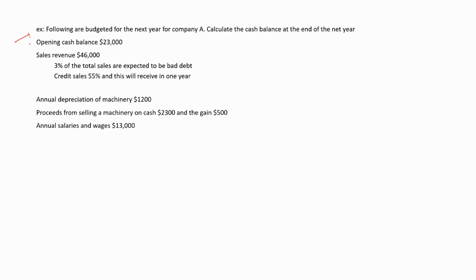They have given us the opening cash balance, sales revenue, annual depreciation, proceeds from selling a machinery and a gain, and finally annual salaries and wages. First of all, we have to identify the cash flows and the non-cash flows. The opening cash balance is a cash item, so we consider this item. Under sales revenue, they have given two points and we have to consider each point at a time to calculate the cash items.